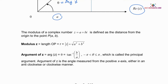The modulus of a complex number Z is defined as the distance from the origin to the point P. The modulus of Z, or the length of OP denoted by R, is given by the formula: the square root of A squared plus B squared. The argument of Z, or theta, is given by the formula: tangent inverse of B over A.